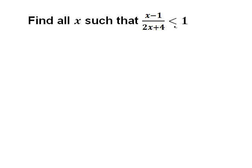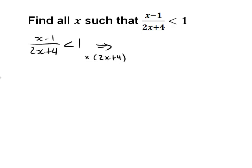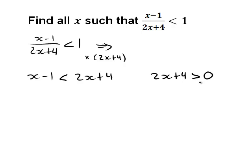What do we know about 2x plus 4? Nothing really. So if we want to take this approach, we have to consider that 2x plus 4 could be positive or negative. If we multiply both sides by 2x plus 4, we get x minus 1 on the left and 2x plus 4 on the right. The inequality stays less than if 2x plus 4 is greater than 0, but changes to greater than if 2x plus 4 is less than 0.